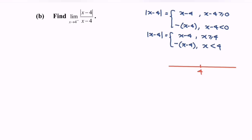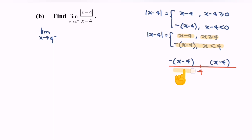With 4 as the boundary value, kindly refer to the piecewise function. When x approaches 4 from the left, we use the piece where x is less than 4, so the function is negative (x minus 4) over (x minus 4). Notice the common terms cancel, giving us the limit of negative 1.